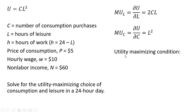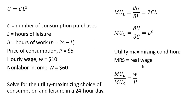The utility maximizing condition is such that the marginal rate of substitution equals the real wage. Graphically, this is where the slope of the indifference curve equals the slope of the consumer's budget line. The marginal rate of substitution is the marginal utility of leisure divided by the marginal utility of consumption, and the slope of the budget line is the real wage — that is, the wage divided by the price level.